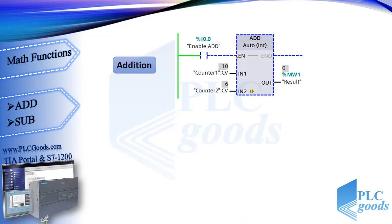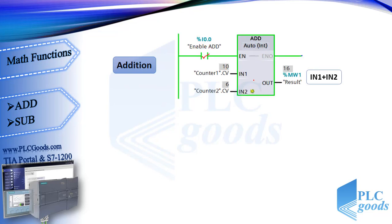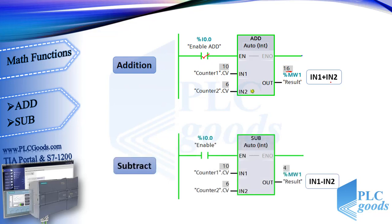This is the ladder symbol of the add function. For math functions we need to determine data types. This function adds the value at input IN1 and the value at input IN2, and outputs the sum. Here we have two values from two counters: 10 and 6, so the summation is 16. But here it shows 0 — why? This and other math functions have an enable input. If the I0.0 input is activated, the add function will do its work and store 16 at MW1 address.